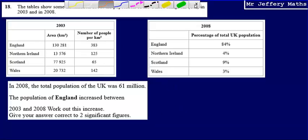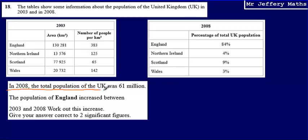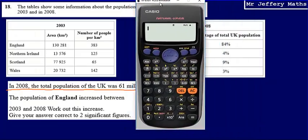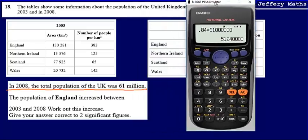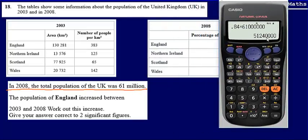First of all I'm going to use this piece of information: in 2008 the total population of the UK was 61 million. I know that the percentage of the total UK population was 84% at this time. So I'm going to work out what 84% of 61 million is, using a percentage multiplier — 84% gives a multiplier of 0.84 — and multiplying that by 61 million gives an answer of 51,240,000. So the population of England in 2008 was 51,240,000.